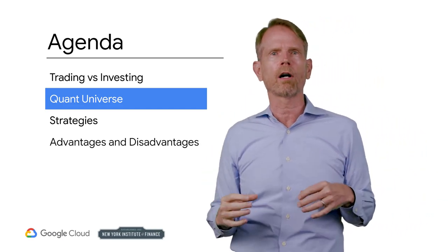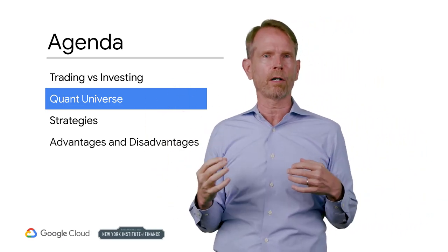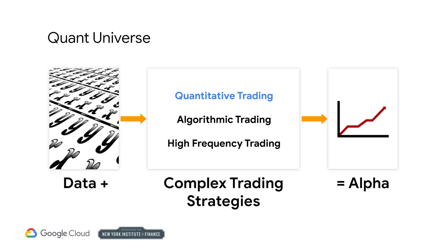In this section, we will talk briefly about the different parts of the quant universe. Quantitative trading is a family of analytical methods and execution strategies that comprise the quant universe. Quant trading has gradually taken over the world and now accounts for almost 90% of trading volume overall.